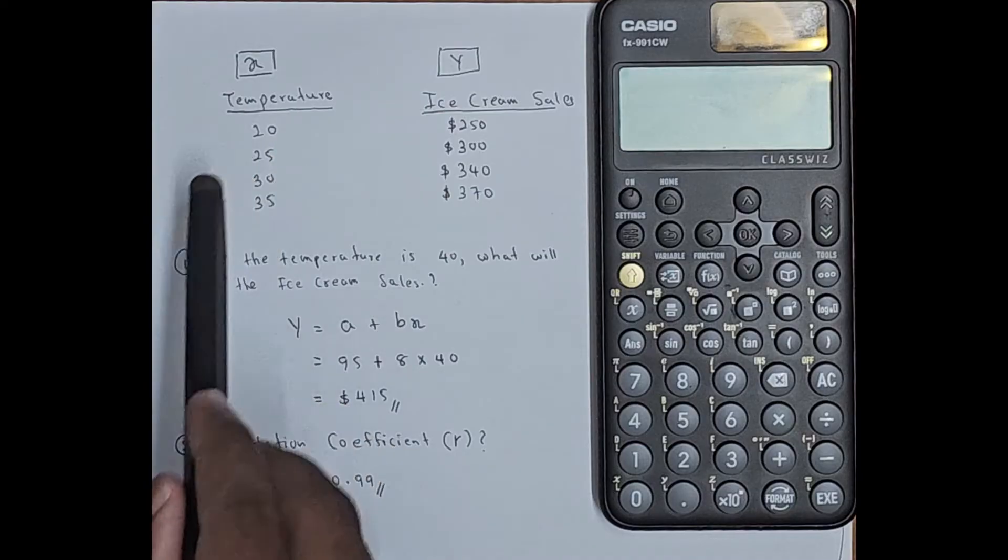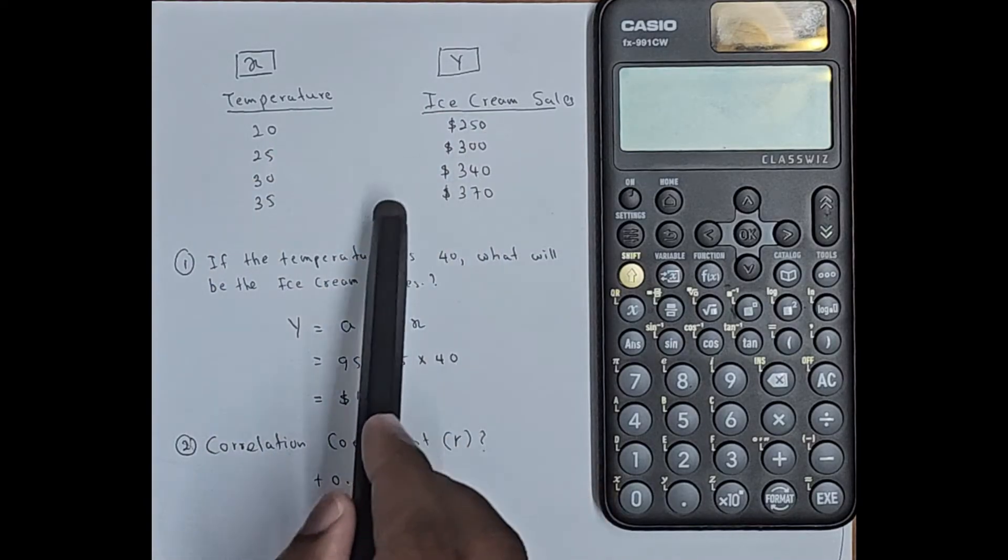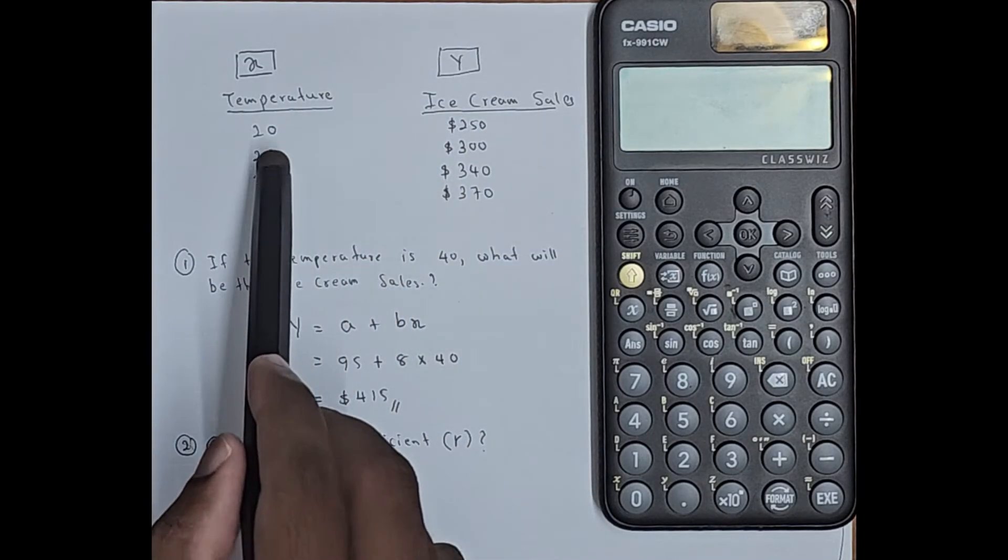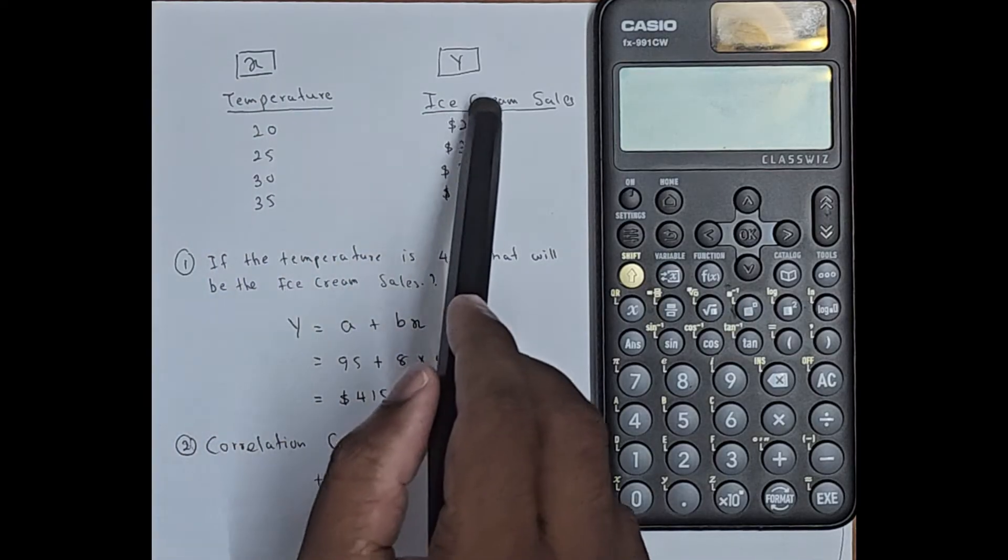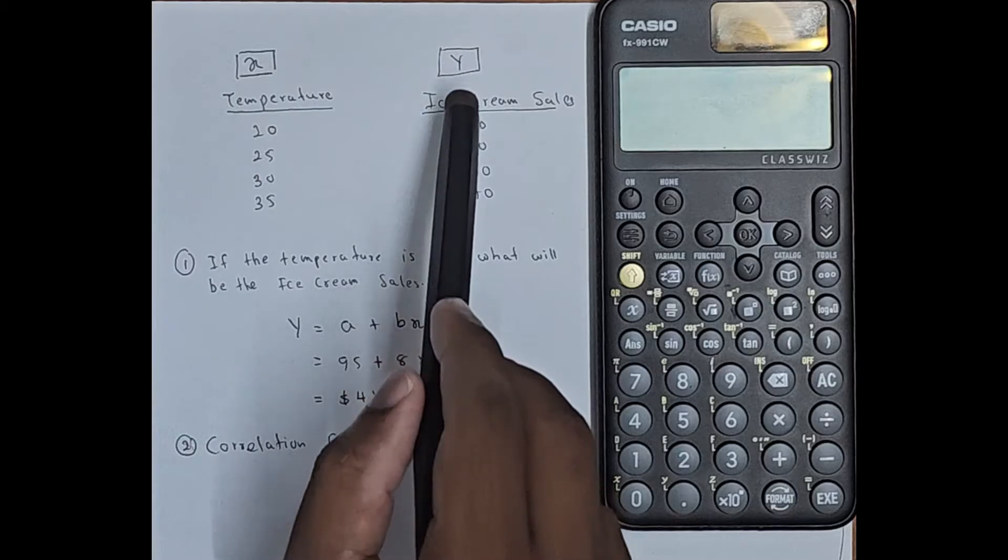Temperature is the independent variable, ice cream sale is the dependent variable. So for the independent variable I have assigned the letter X and for the dependent variable I have assigned the letter Y.